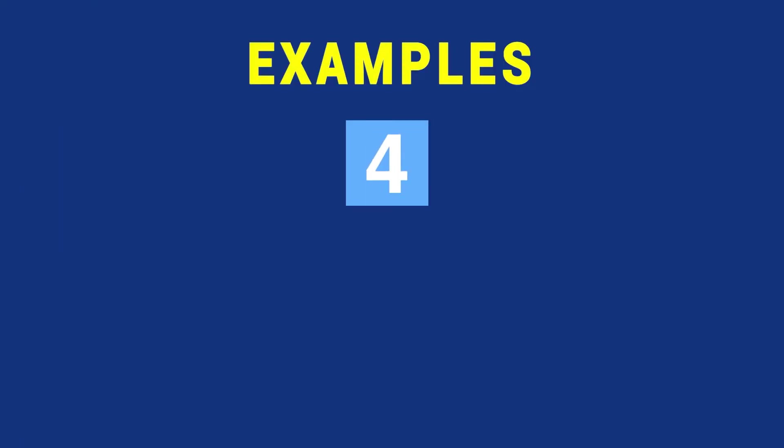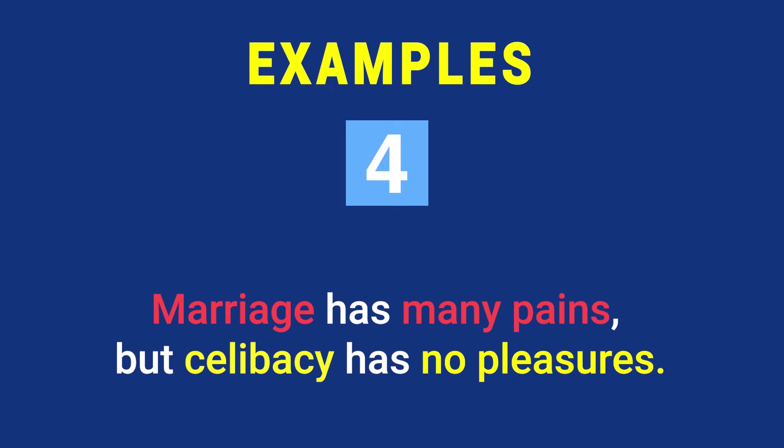Example number four: 'Marriage has many pains but celibacy has no pleasures.' Here marriage is contrasted to celibacy, pains to pleasures, and many to no. So there are three word-pairs which are opposites within one sentence, and idea-wise there is also a contrast, making this an antithetical statement with perfect balance between the two contrasted ideas.